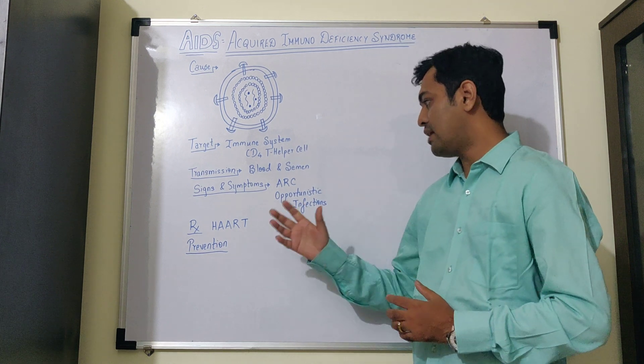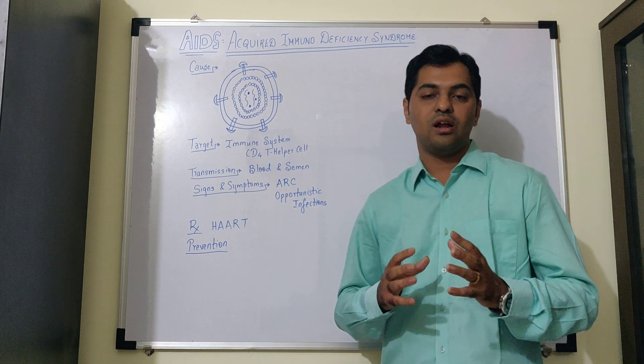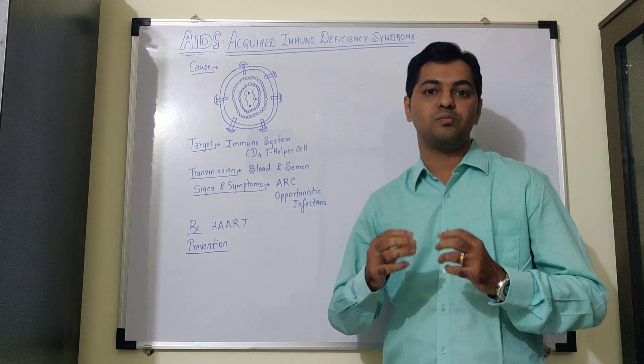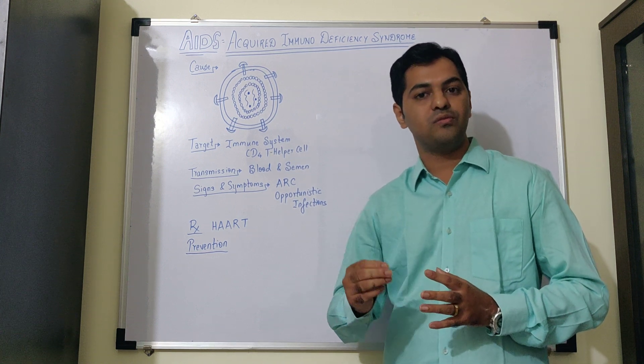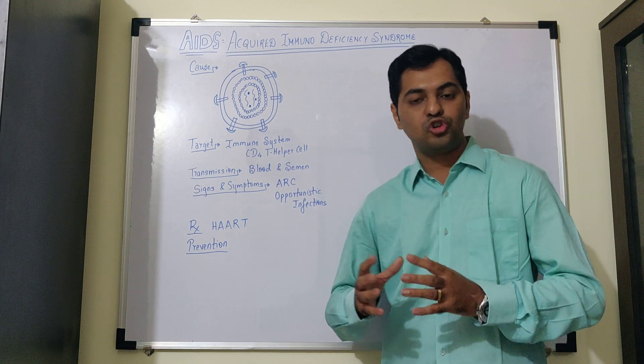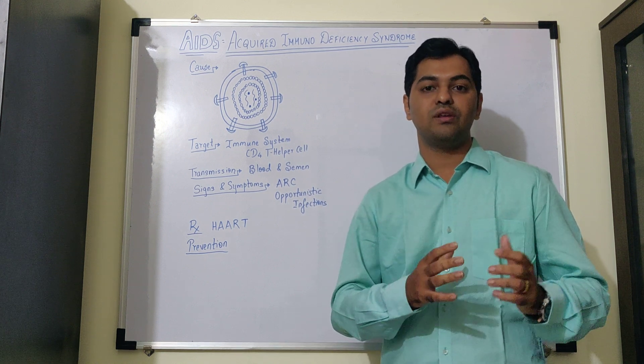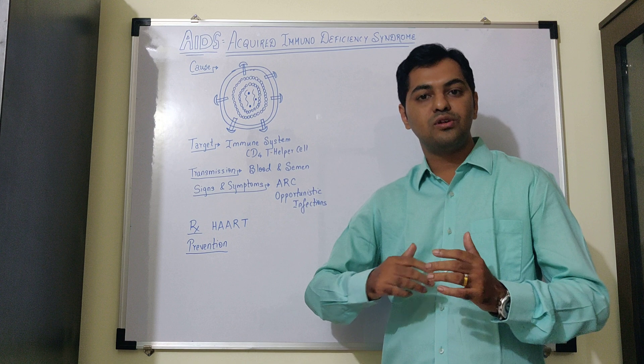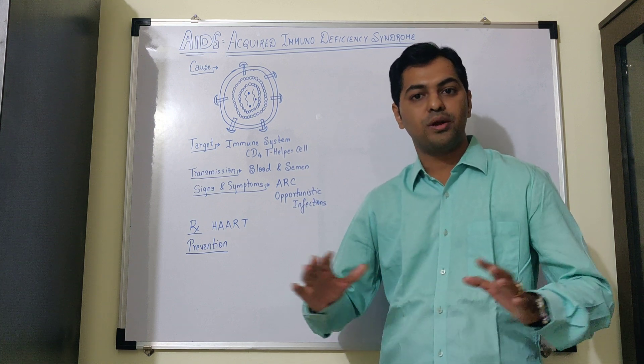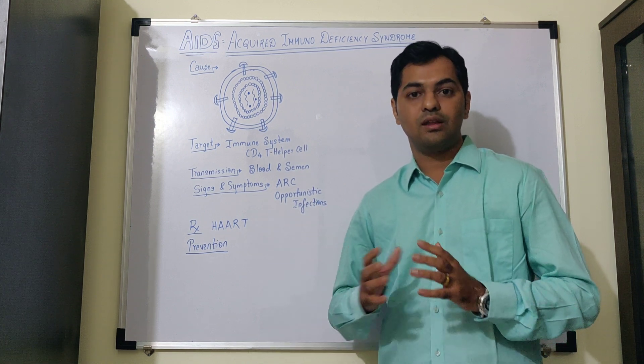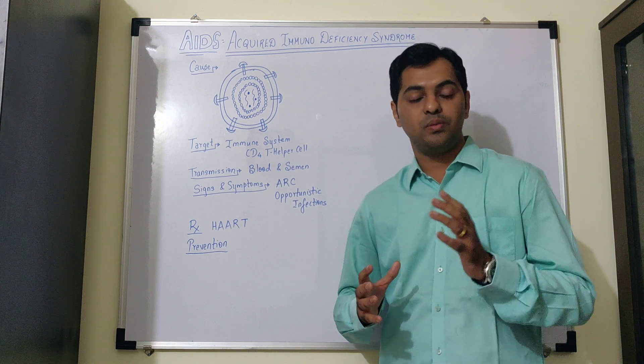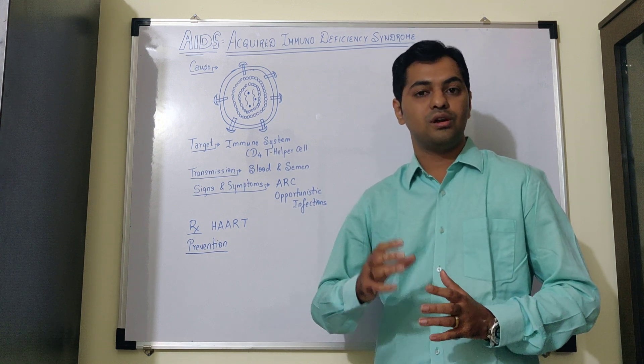Coming to the signs and symptoms. Now, in the initial level, there are certain stages where the patient experiences severe form of fever, lethargy, nausea. This is known as acute HIV infections. Then, the patient directly goes into asymptomatic period for almost 5 to 10 years where there are no symptoms but the patient is still carrier of the disease.